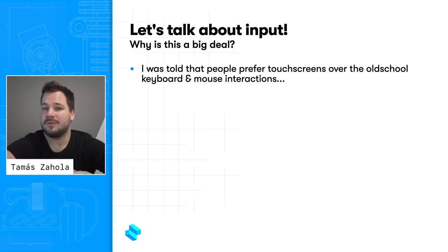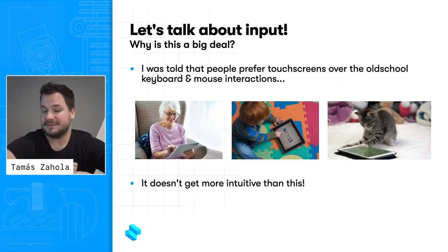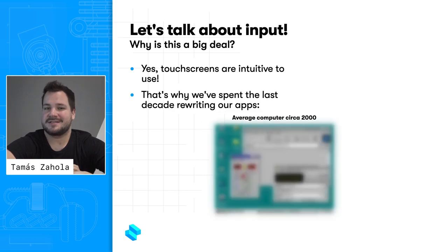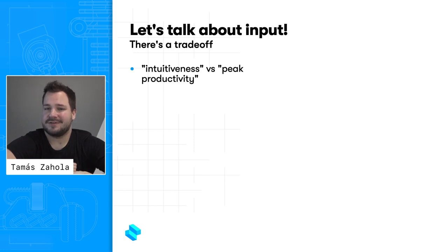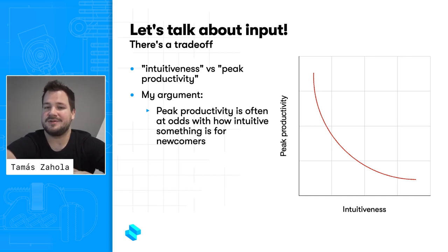Some of you might ask: why is this a big deal? Since we were told that everyone prefers touch screens over keyboard and mouse — it's simply the most intuitive way of interacting with a computer, right? Well, yes, indeed they are intuitive to use. That's why many of us spent the last decade rewriting software to look more touch-friendly. And our users were happy with this most of the time. But intuitiveness for new users is just one aspect of our tools. My argument is that the peak performance one can achieve with their tools often has an inverse relationship to their intuitiveness on first use.